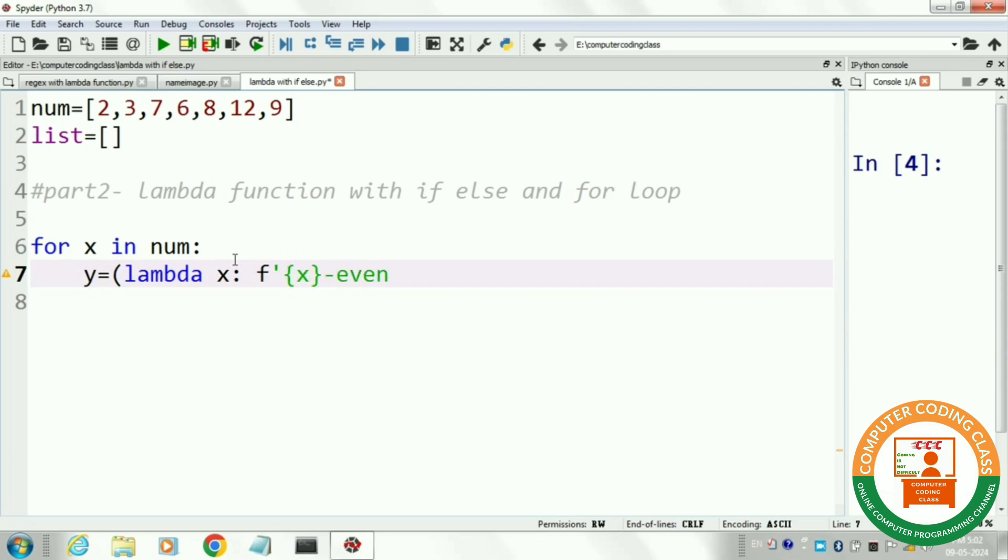Here, if x mod 2 equal to 0, then we will write fx even. Here, x is the number of num list. After if-condition, we will write else-condition where we will denote x as an odd number.